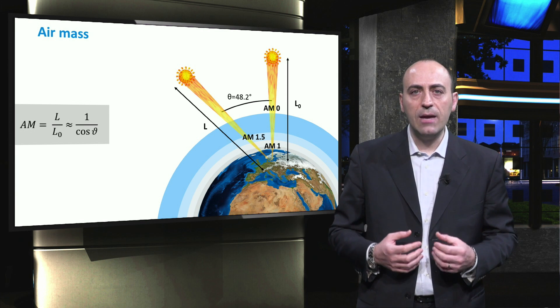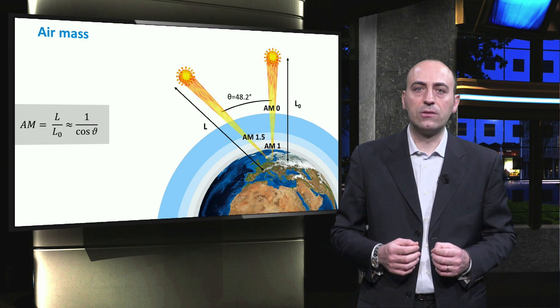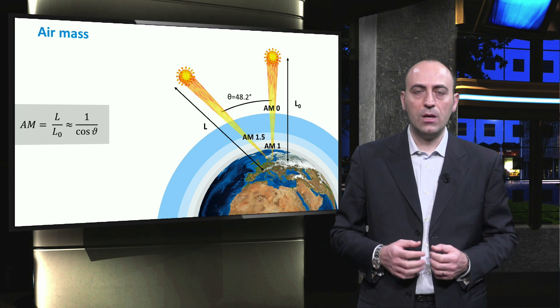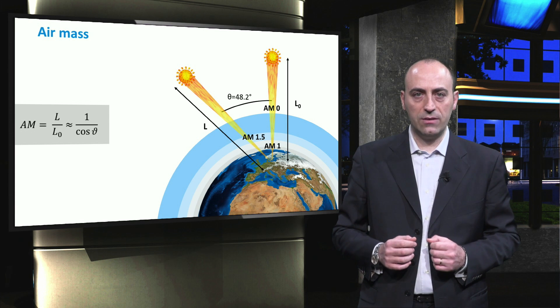Here, the AM 1.5 is depicted, also called the standard reference spectrum, since it is used to characterize cells at lab and industrial level. It is obtained when the Sun has an angle of about 48 degrees with the zenith.